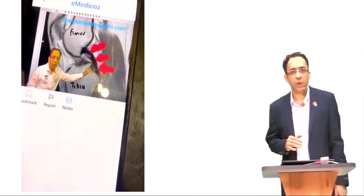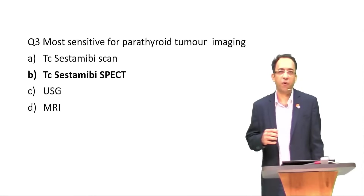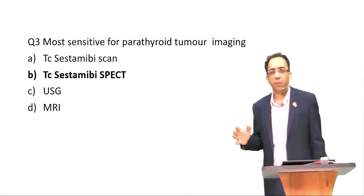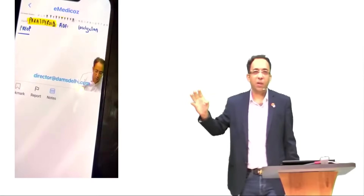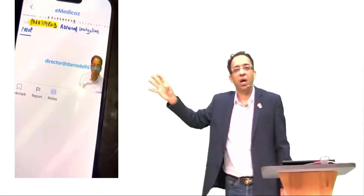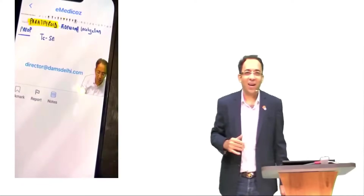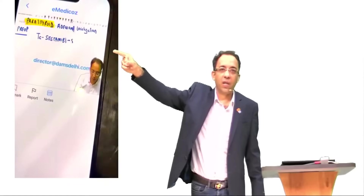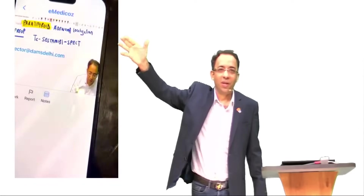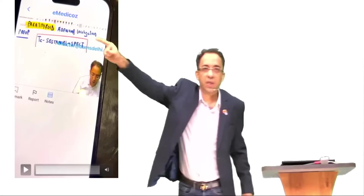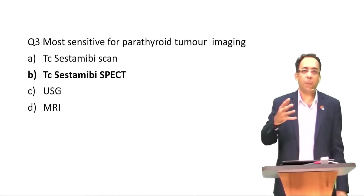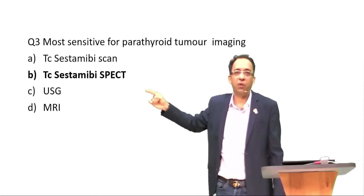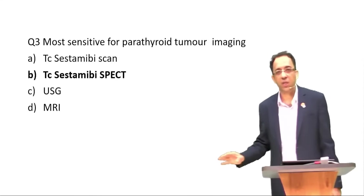The third question I could recollect from radiology was: what is the most sensitive investigation for parathyroid imaging? This is why it's important to learn from a subject matter expert. When I was discussing in my radiology class, I told you for parathyroid imaging we need to do localization in parathyroid tumors. The answer is SPECT. SPECT has more power than routine imaging because a routine technetium scan is 2D whereas SPECT is 3D. The answer was technetium sestamibi SPECT, and it is there in your class notes and back-to-basics.